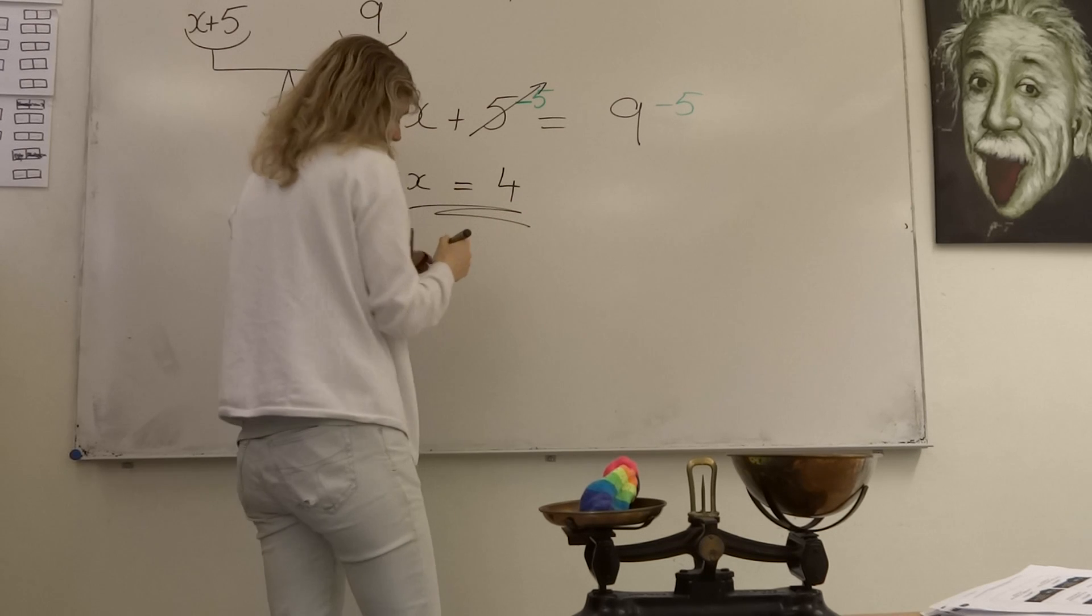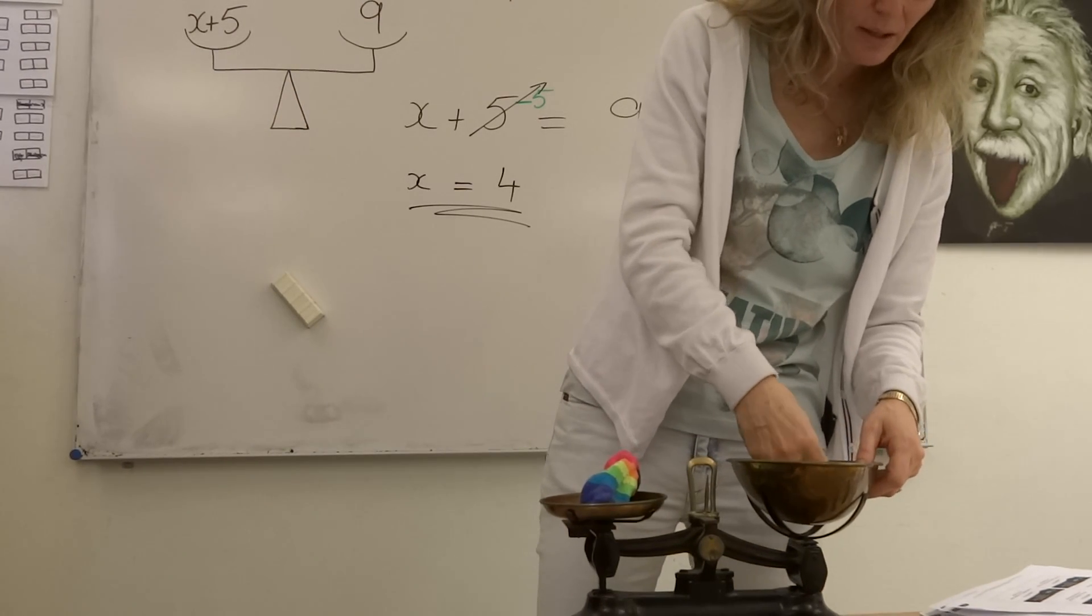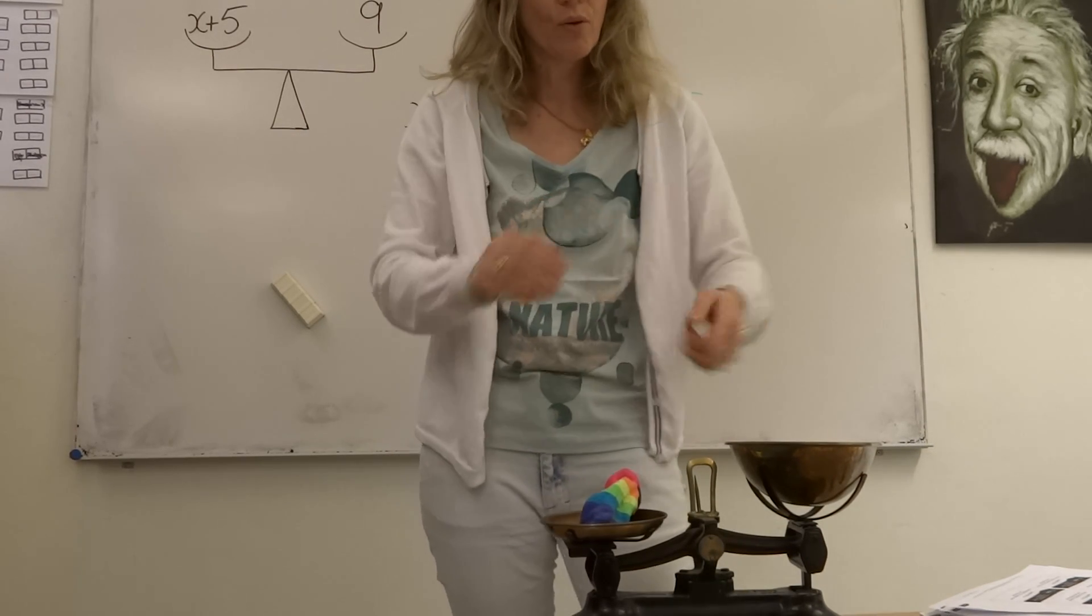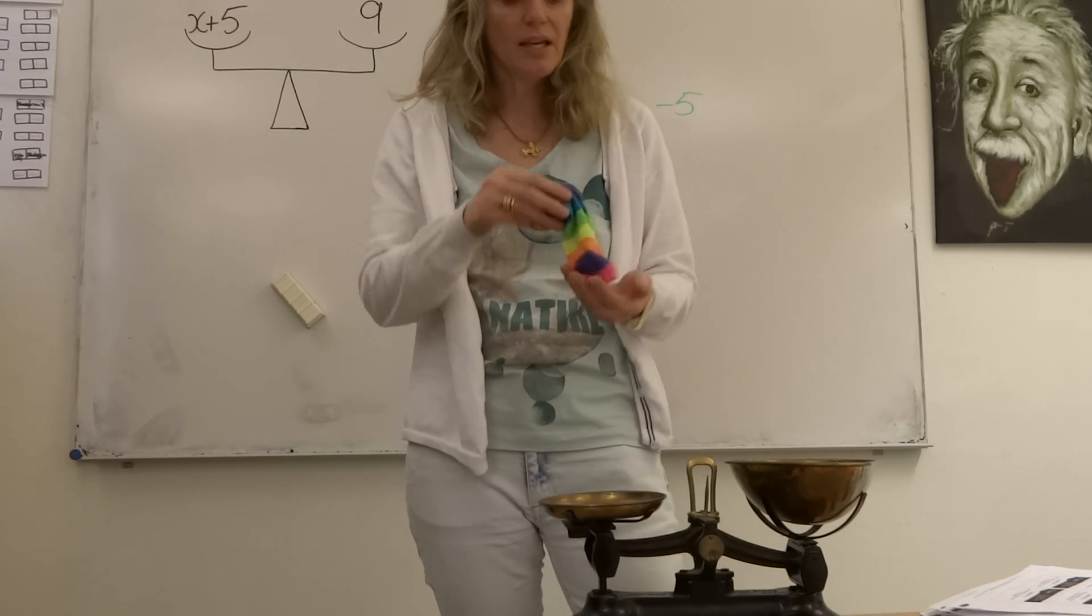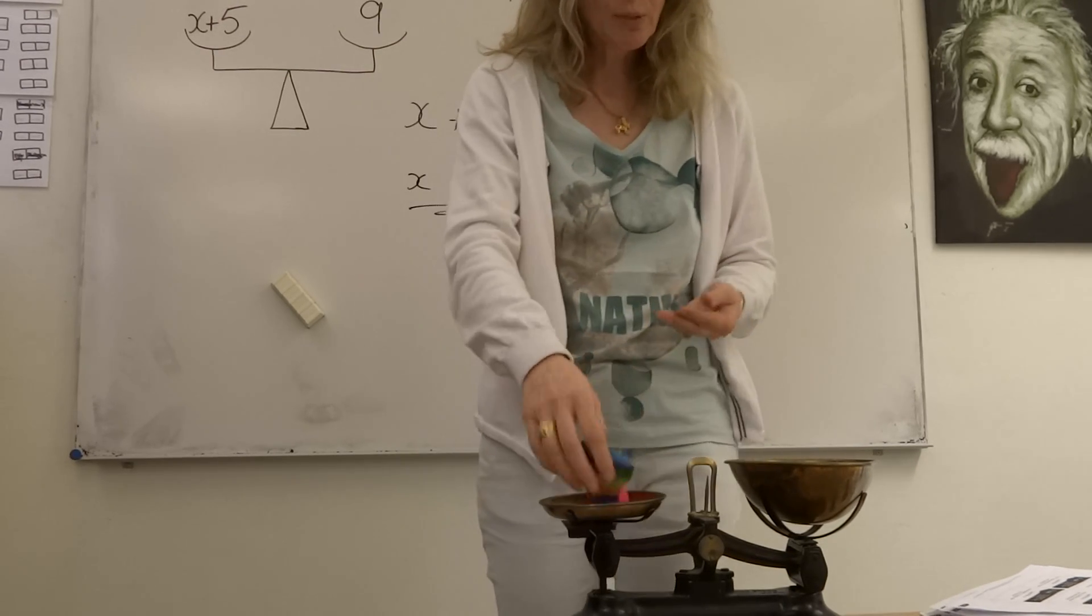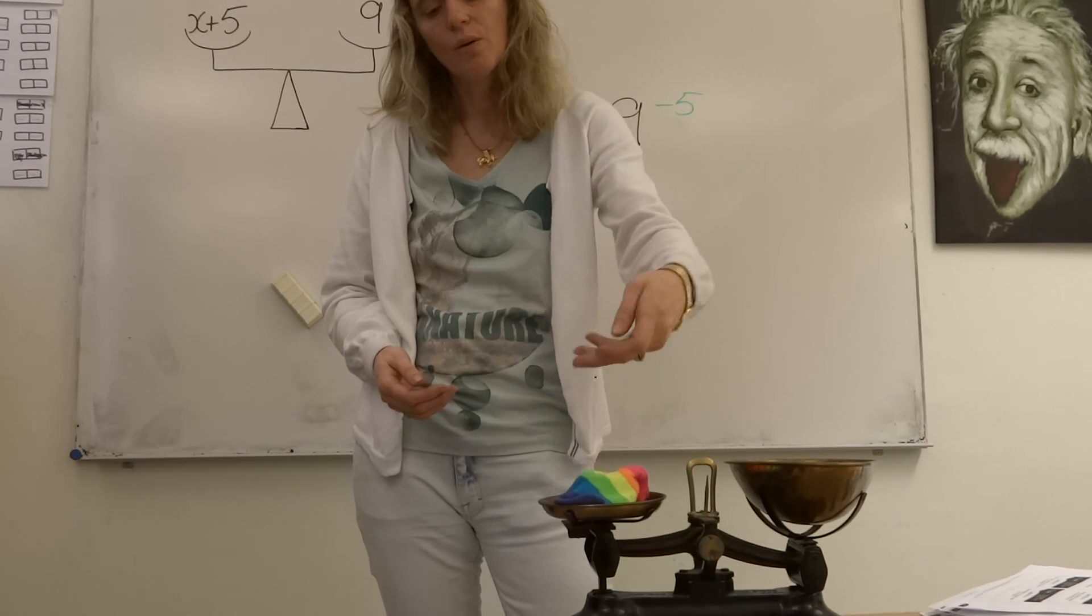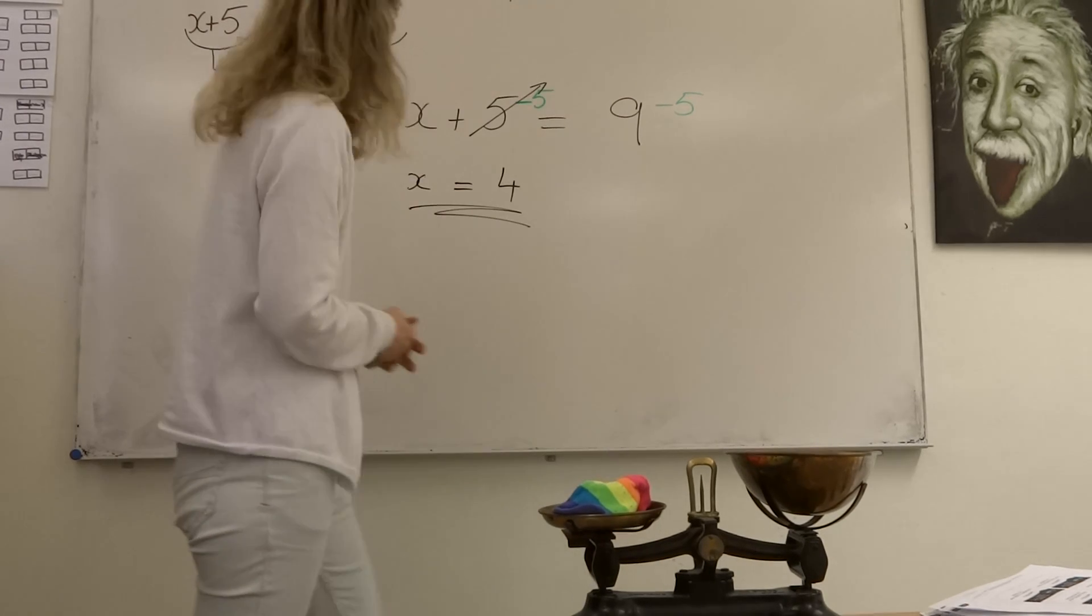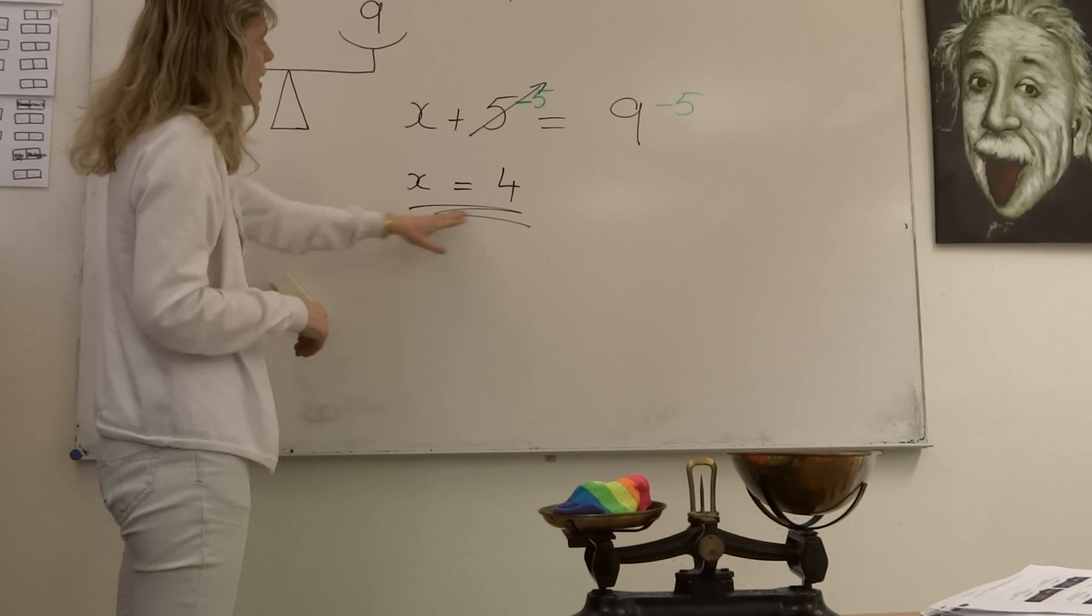So, x must equal 4. It means that on this side of my scale, I have 4 coins. 1, 2, 3, 4. So, in my bag here, if I'm not very much mistaken, my little special bag, I should have 4 coins. 1, 2, 3, 4. And that's exactly what was in my little bag there. So, I've just proved mathematically that x equals 4.